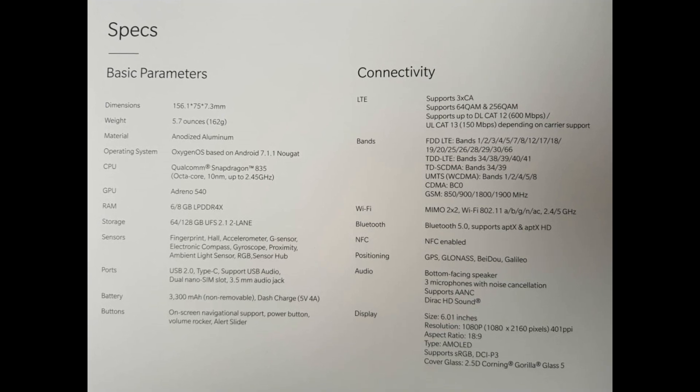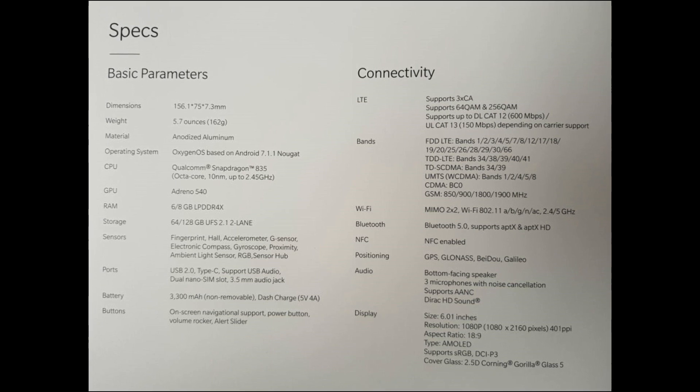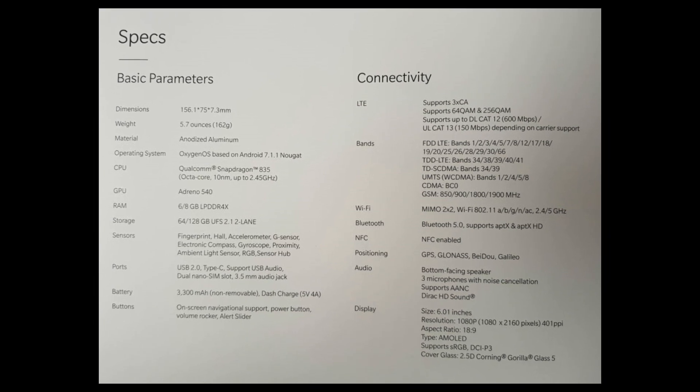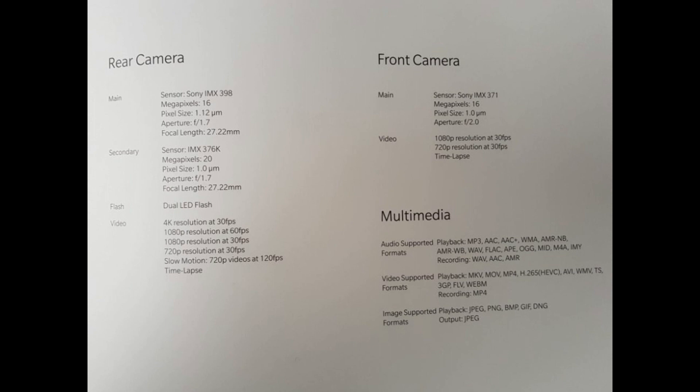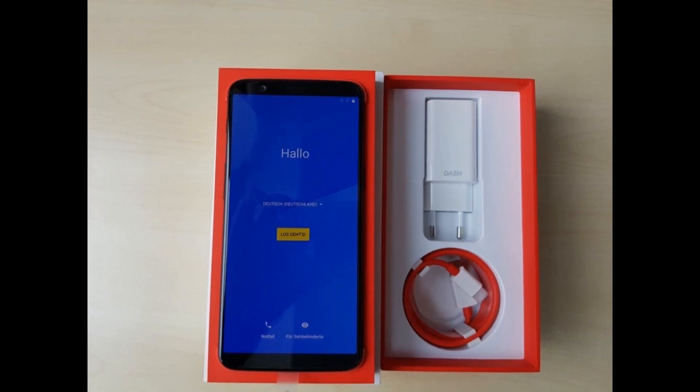The unboxing images have leaked — probably given to some reviewer or YouTuber who shared the pictures online. From what it looks like, apart from the fingerprint scanner being moved to the back and an edge-to-edge or bezel-less display, there is no change between the OnePlus 5 and the OnePlus 5T. I don't even see it coming with Android 8.0 out of the box.